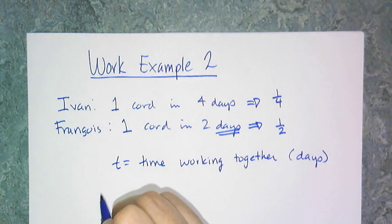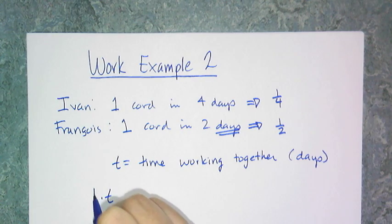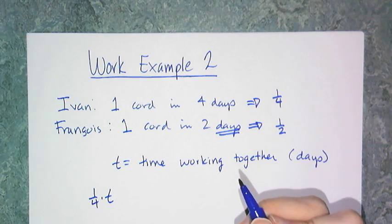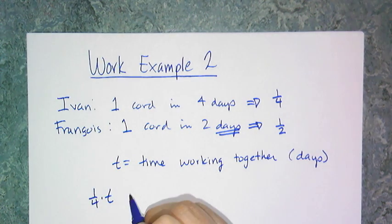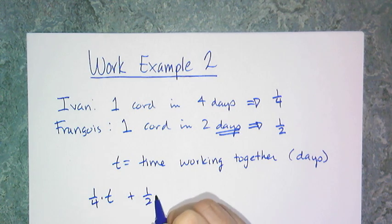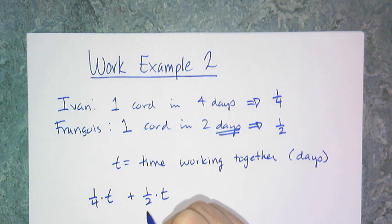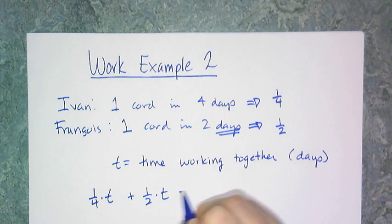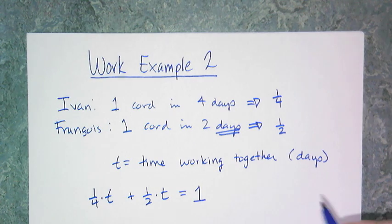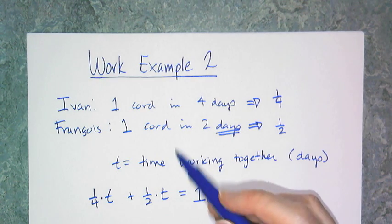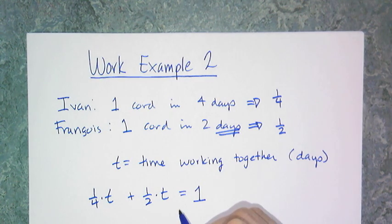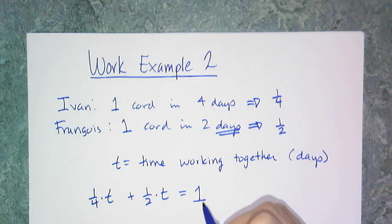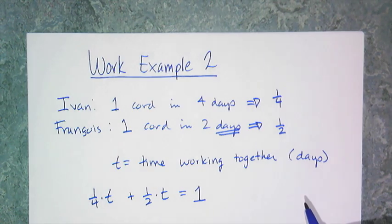And so, if Ivan works at a rate of one-fourth of a job a day for t days, and Francois does the same thing one-half of a job in t days, together, they will complete one full job, or they will split one chord of wood. So, if I solve this equation now, then I would figure out, for t, I'd figure out how long it takes them working together.